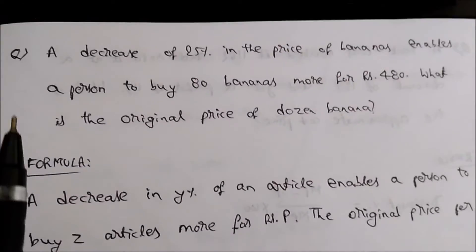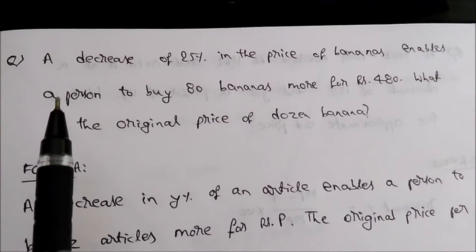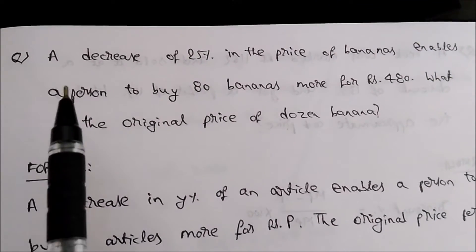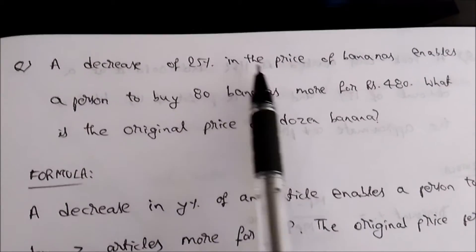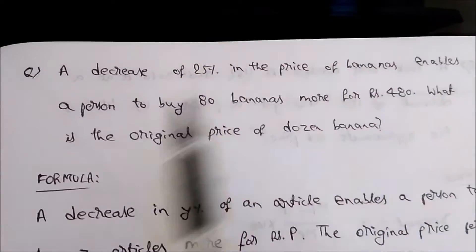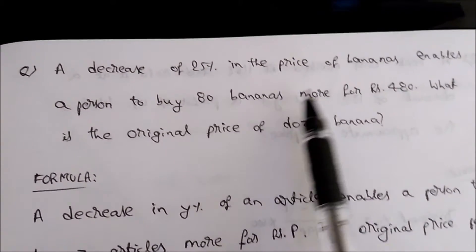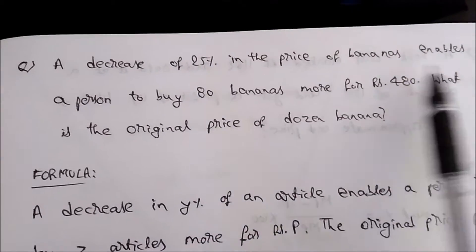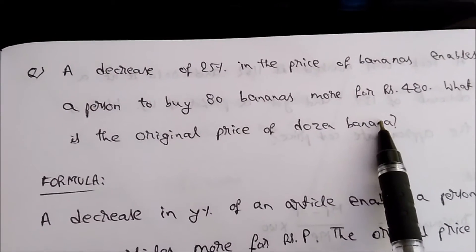Hi friends, today I have taken a problem from the topic profit and loss. The question is: a decrease of 25% in the price of bananas enables a person to buy 80 more bananas for rupees 480. What is the original price of a dozen bananas?